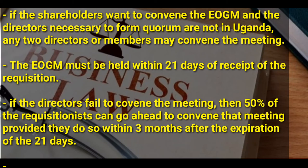If the directors fail to convene the Extraordinary General Meeting, then 50 percent of the requisitionists can go ahead to convene that meeting, provided they do it within three months after the expiration of the 21 days. That was all about the Extraordinary General Meeting.